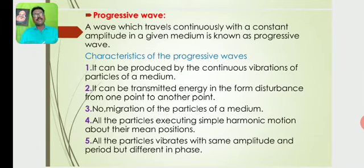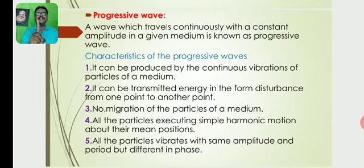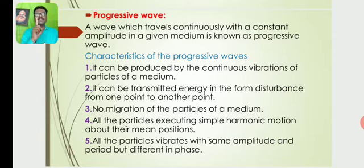During the propagation of a progressive wave in any medium, the particles vibrate about their mid position or equilibrium position without migration. All the particles vibrate with the same amplitude and period but differ in phase. These are the characteristics of progressive waves.